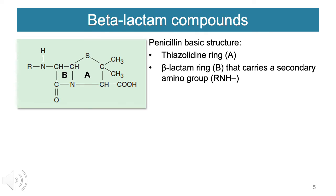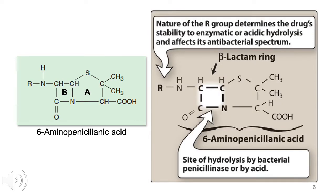This is the basic structure of penicillin. A represents the thiazolidine ring and B represents the beta-lactam ring. In the beta-lactam ring, it carries a secondary amino group or R group. This A and B are very important for the biologic activity of this group. The R group attached to the beta-lactam ring determines the drug's stability to enzymatic or acidic hydrolysis and affects its antibacterial spectrum. The beta-lactam ring is important for the most popular resistance pattern — hydrolysis by bacterial penicillinase or by acid, also known as beta-lactamases. We will discuss this further when we go to resistance patterns.